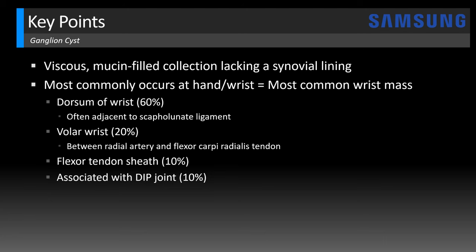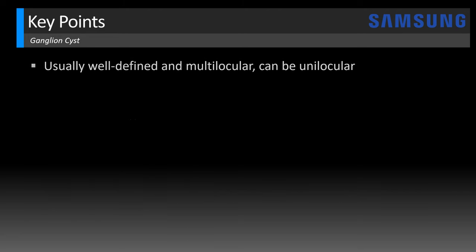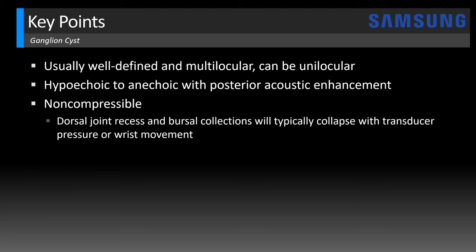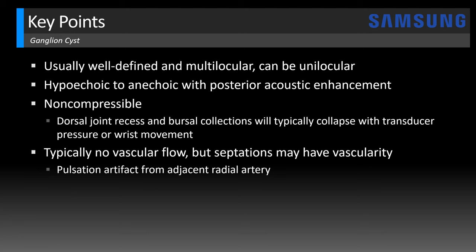They can also be associated with the distal interphalangeal joint. They grow out of the tissues surrounding a joint, kind of like a balloon on a stalk — as in this case, we actually saw a pedicle connecting to the joint. They can fluctuate in size and may increase and decrease over time. They're usually well-defined and multilocular, but can be unilocular, and they're hypoechoic to anechoic, often with posterior acoustic enhancement. A key defining feature is that they're non-compressible, which can help differentiate them from dorsal joint recessed fluid or bursal collections, because those will typically collapse with transducer pressure or wrist movement on dynamic evaluation. We typically don't see vascular flow within ganglion cysts, but sometimes septations may have some minor vascularity. You can also get fooled by pulsation artifacts from the adjacent radial artery, so watch out.